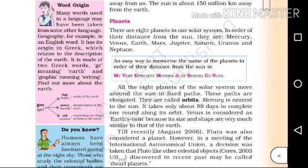Geometry means measurement of the earth. Metrian is a Greek word that means measurement. Geoid — oid is a Greek word meaning resembling the shape or form of the earth. So geoid means Earth-like in shape.